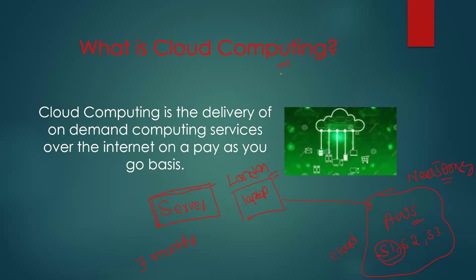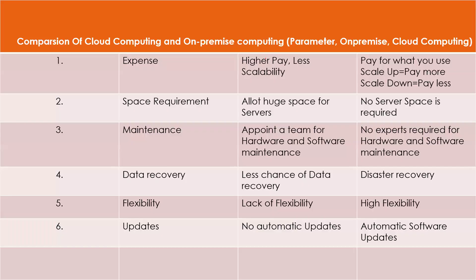Cloud computing refers to doing certain tasks on a server which is far away from us — not in our place. The difference between on-premise and cloud: the first column refers to on-premise computing — bring the server to your organization, set it up, and use it. The second refers to cloud computing. In terms of expense, on-premise requires a lot of upfront investment to buy and set up servers, whereas with cloud computing there is no upfront payment — you rent the server and pay only for the duration you use it.